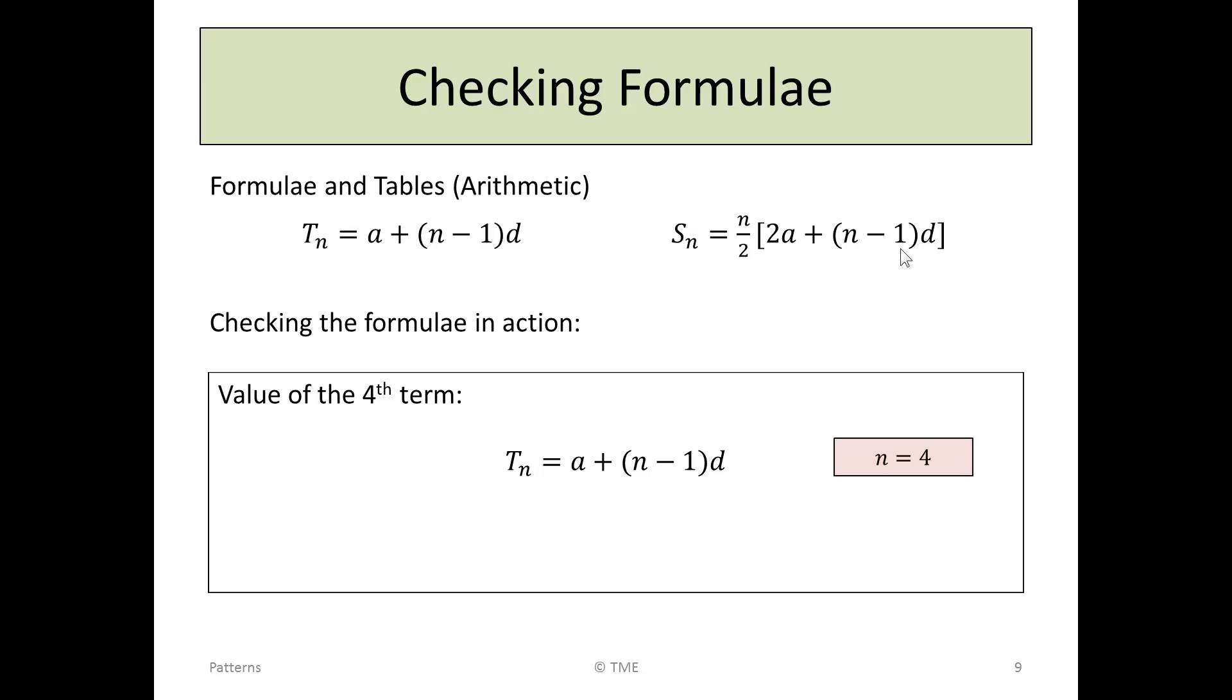Now, let's check these formulae and see if they work, see if they make sense. Let's consider the value of the fourth term using this formula for Tn. We're told that Tn is A plus N minus 1 D, and we're also checking the value of the fourth term, so we're saying, let N be 4. Remember, D is the common difference, and A was the starting point, and in our sequence, A was 2 and D was 3.